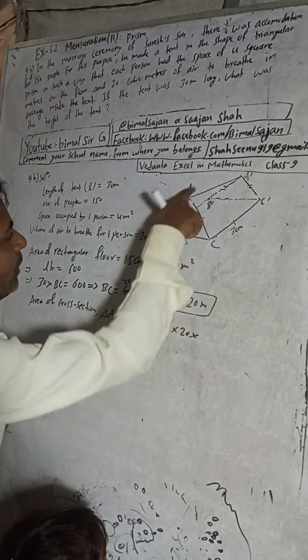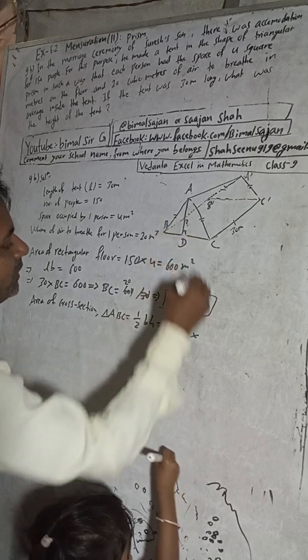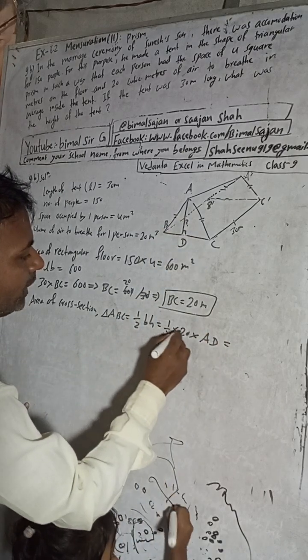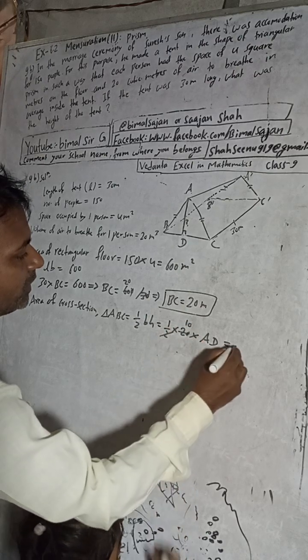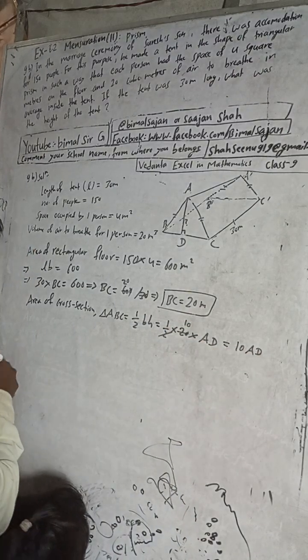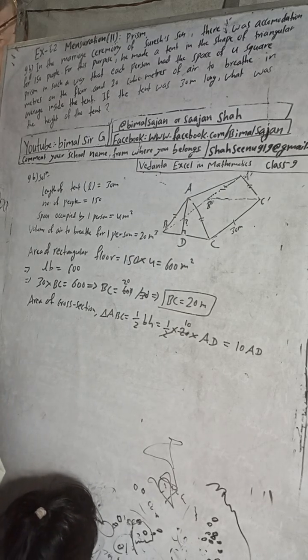We have to find what is the height of tent. So no need of this formula, no need of this formula. Just we can apply here what? Half base into height. This is half base, what is base? Base is our BC into BC.